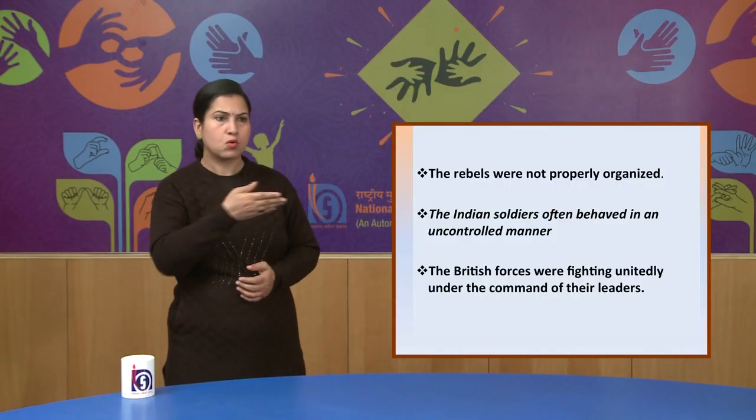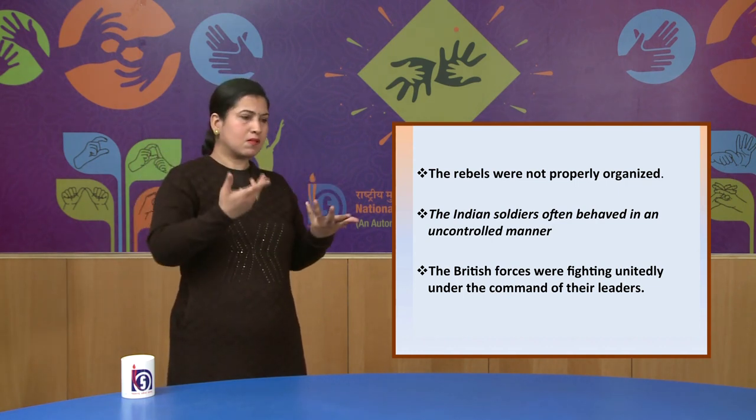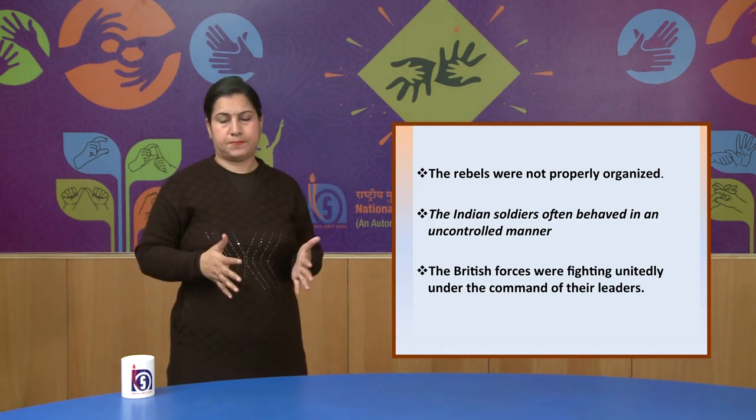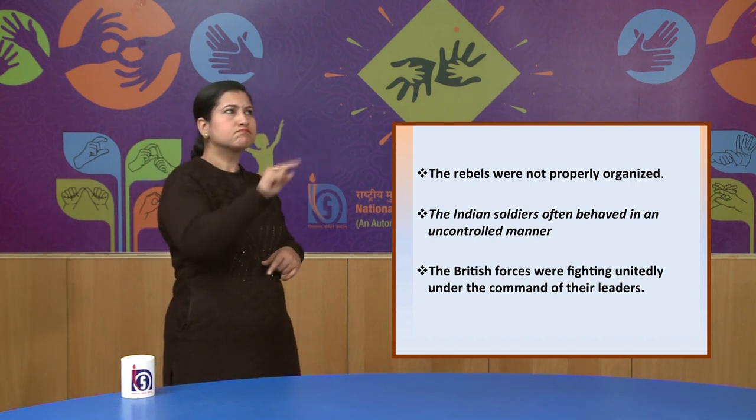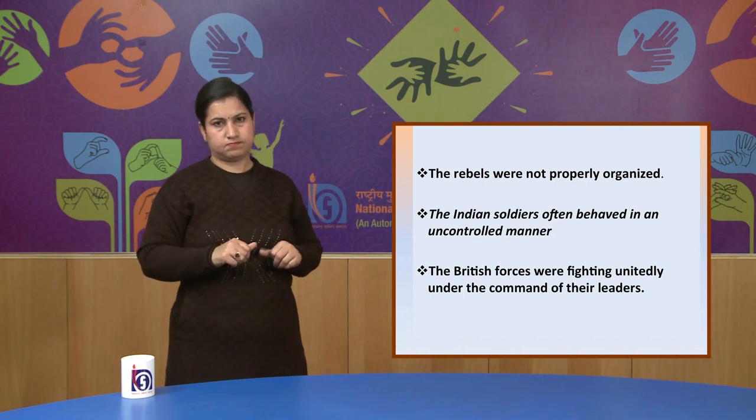The fifth reason for the failure of the revolt of 1857 was the lack of organization. It is important to understand that the rebels were not properly organized. The revolts that took place in different parts of the country were not connected with each other. The Indian soldiers often behaved in an uncontrolled manner because there was no one to guide them, while the British forces were fighting unitedly under the command of their leaders.